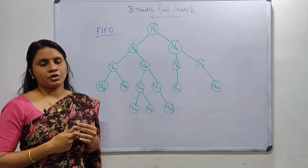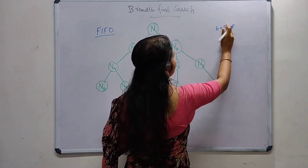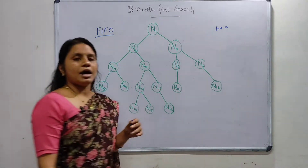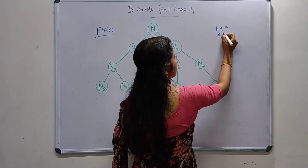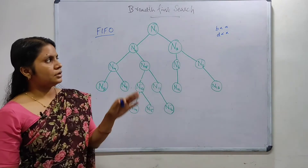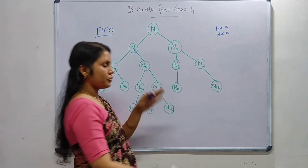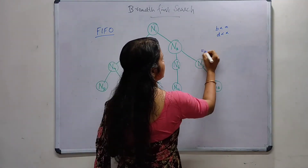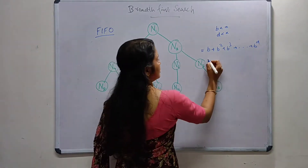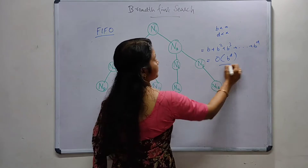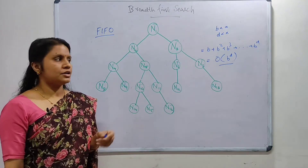The completeness criteria of the breadth-first search algorithm is used to evaluate algorithm performance. Assuming the branching factor b is less than infinity, the number of nodes generated by BFS is b + b² + ... up to b raised to d, which can be represented as O(b^d).